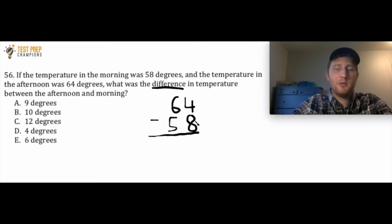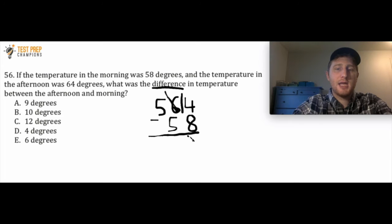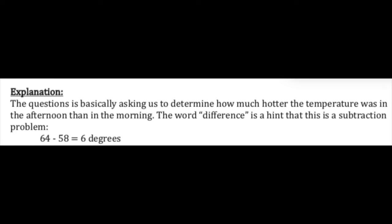I see that I'm going to go 4 minus 8, but 4 is smaller than 8, so I have to borrow from the 6, turn it into a 5, and stick a 1 in front of the 4 — making it 14. So 5 minus 5 is 0, and 14 minus 8 is 6. The correct answer here is E. I have a written solution for this question on the screen. You can pause the video and study it.